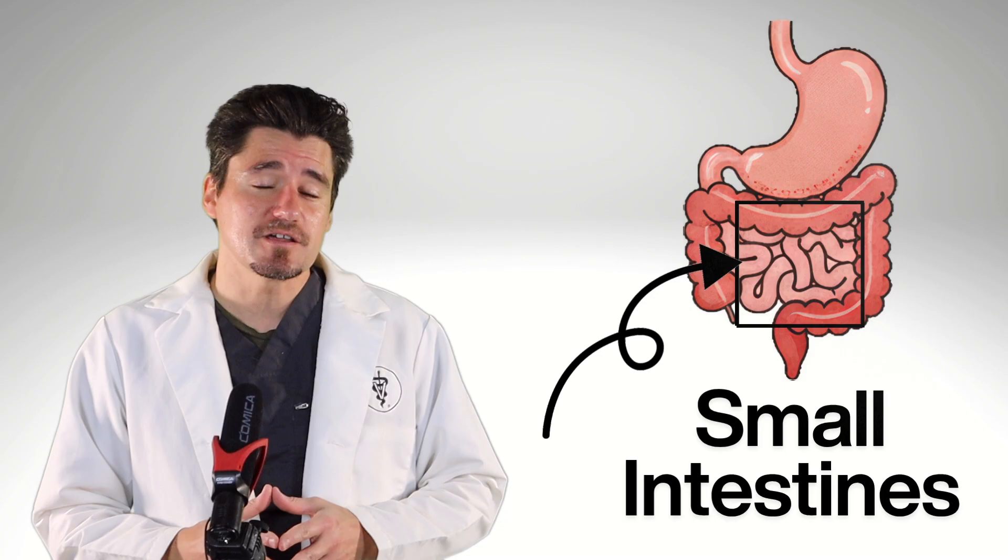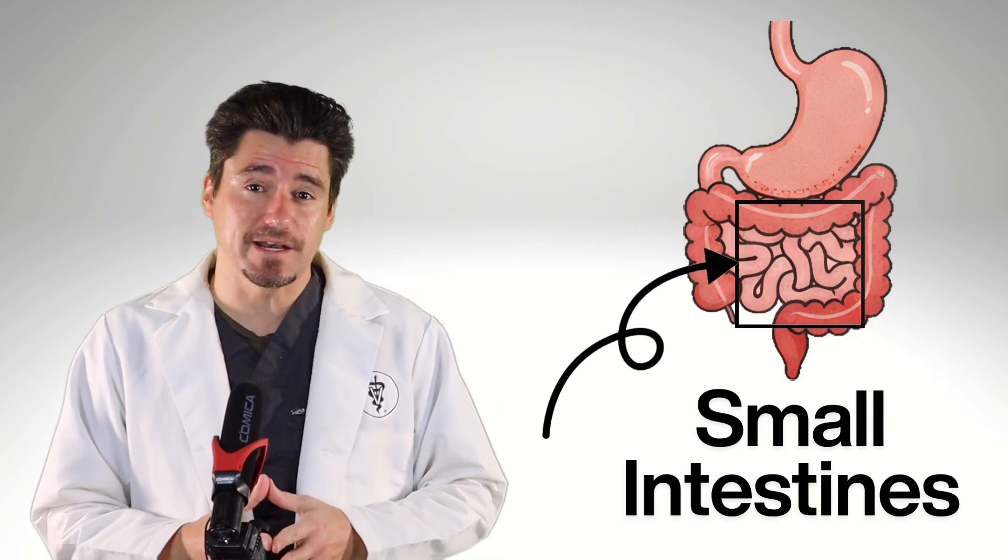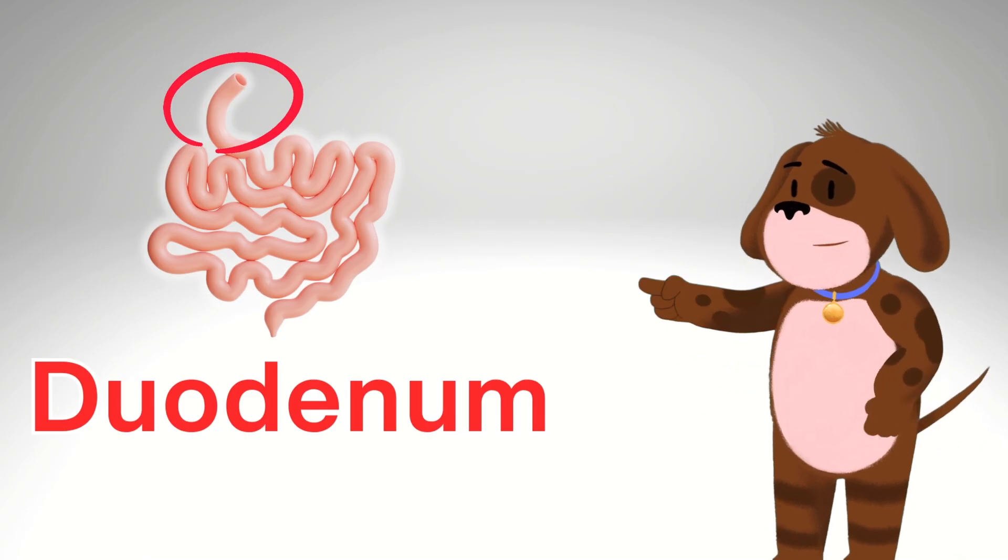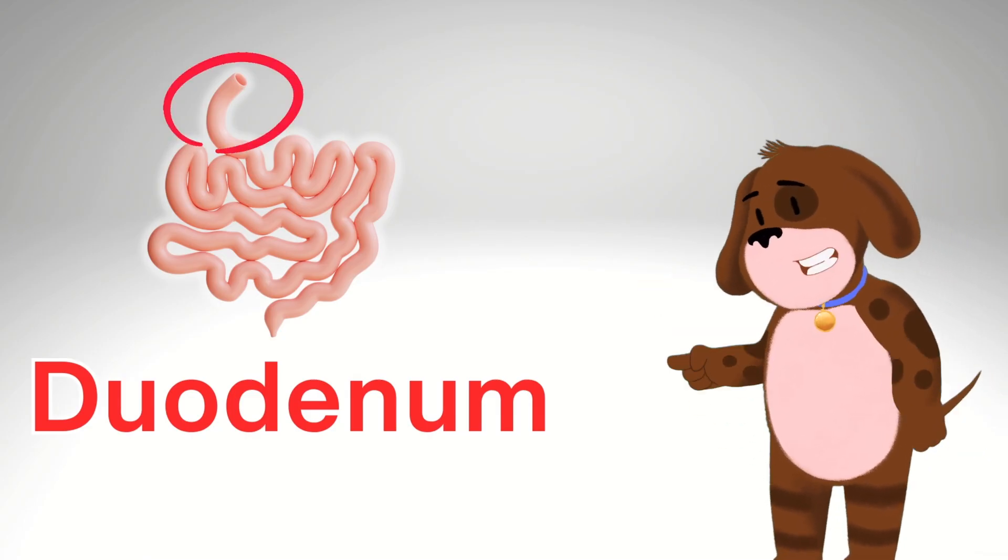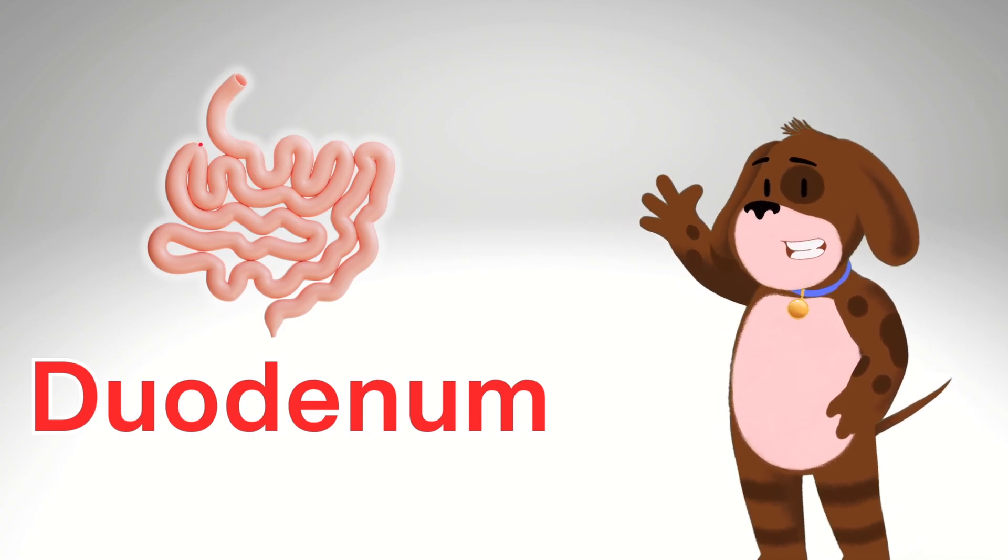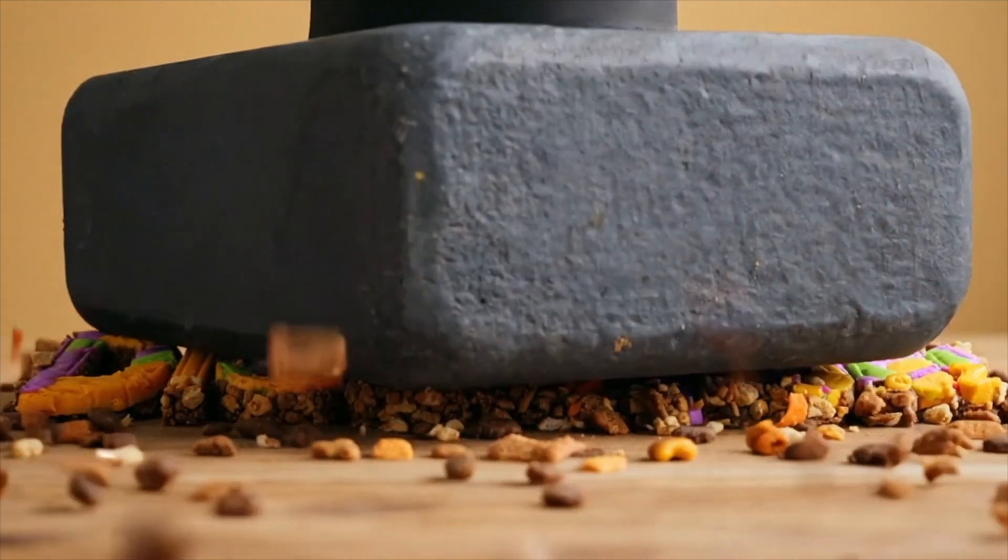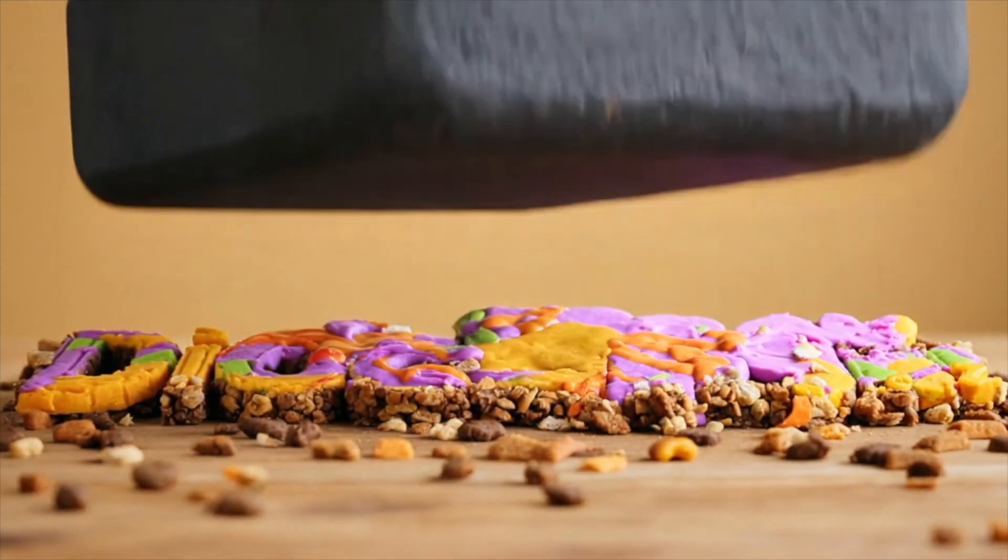The small intestines are made up of three parts. First we have the duodenum. The duodenum is the first part of the small intestine and it attaches to the stomach. When the stomach is done digesting the food, the food falls into the duodenum. The duodenum finishes off the digestion that was started by the stomach.